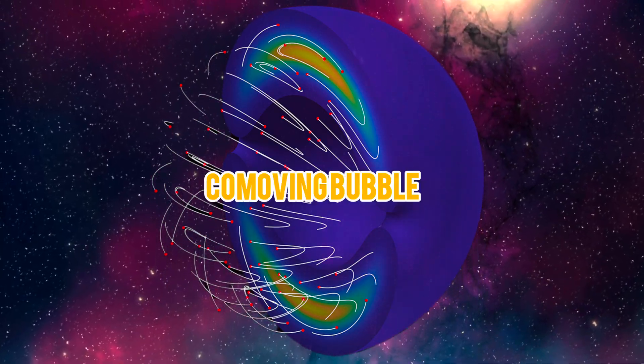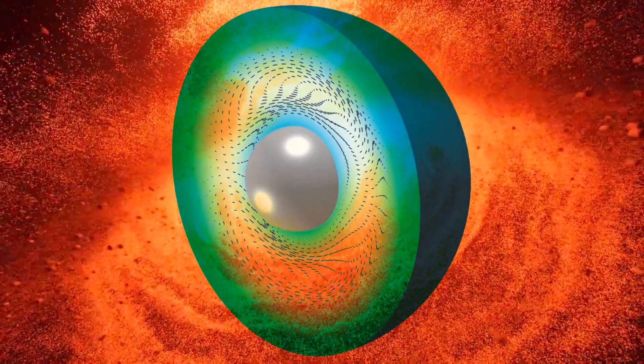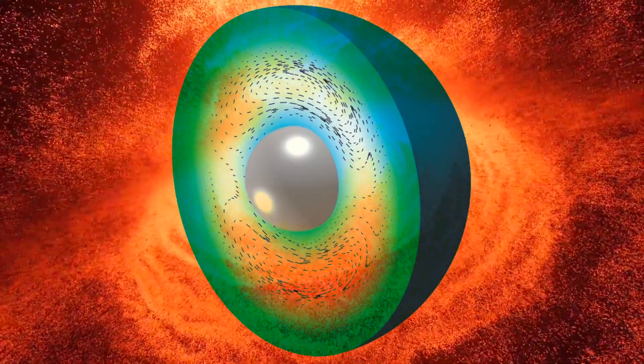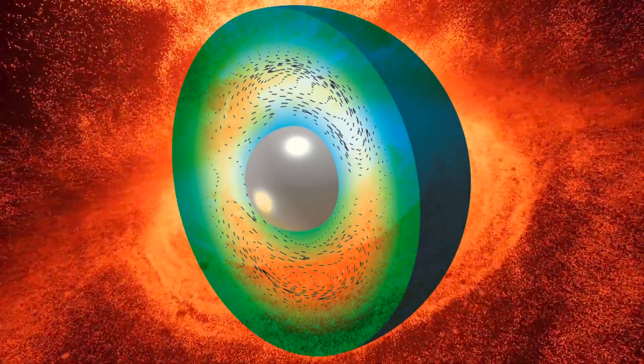Comoving Bubble. The warp drive creates a spatially bounded bubble that moves with the spacecraft, containing the stress-energy distribution necessary for the warp drive.